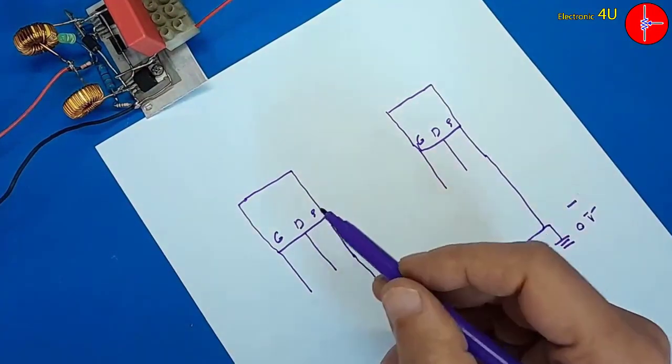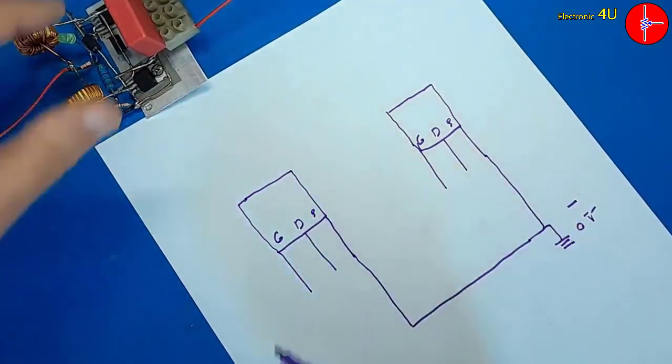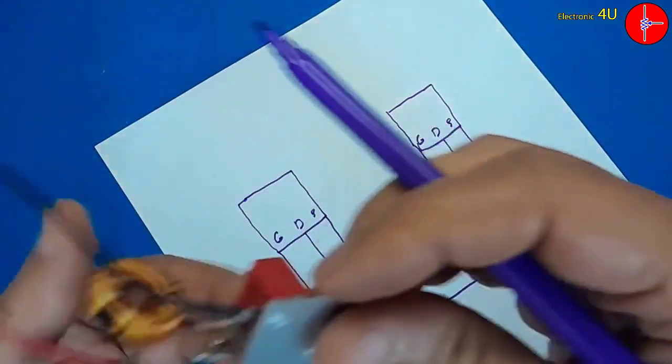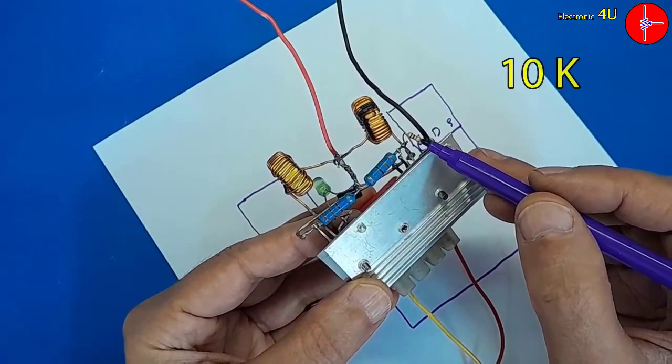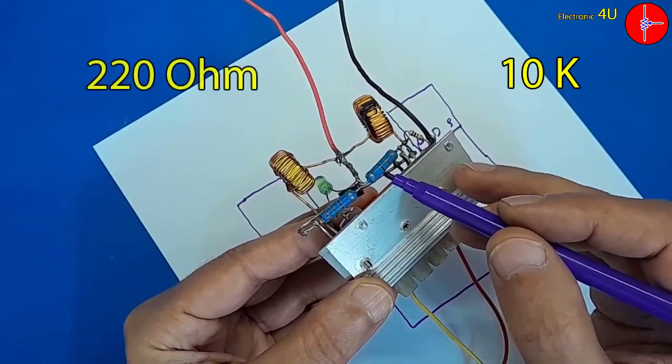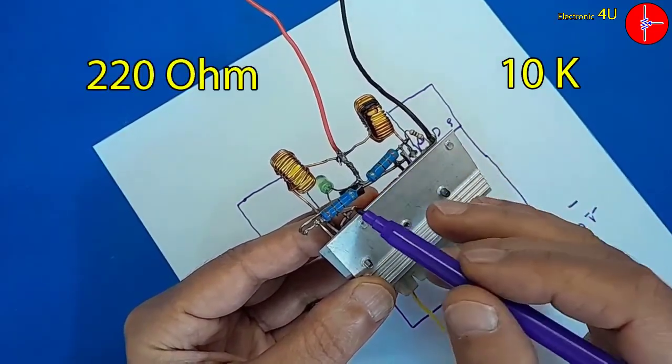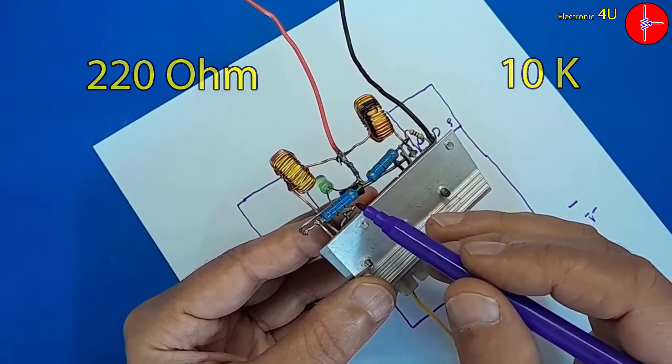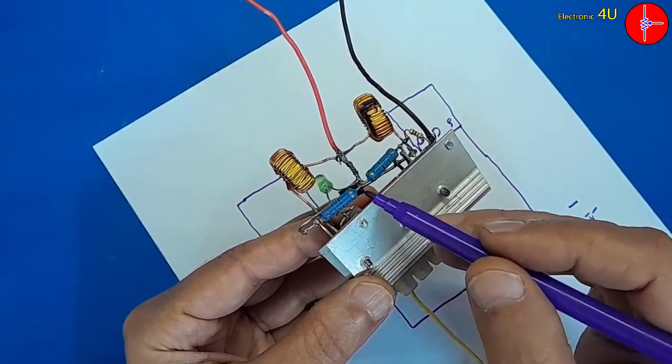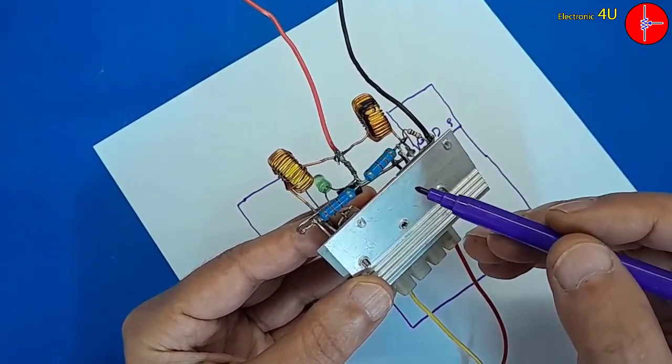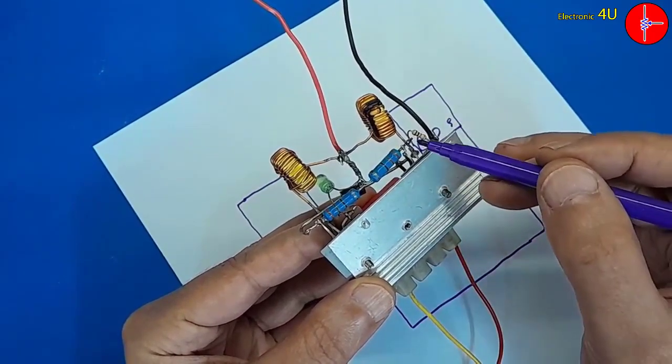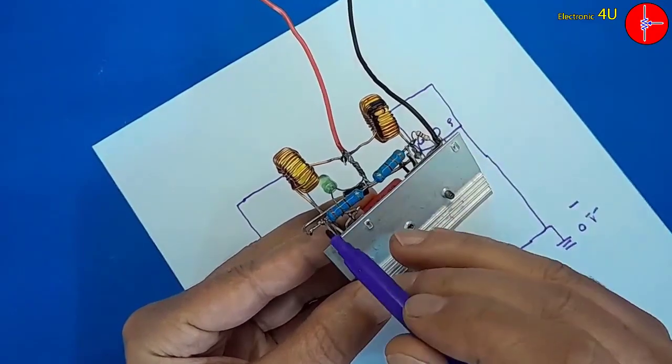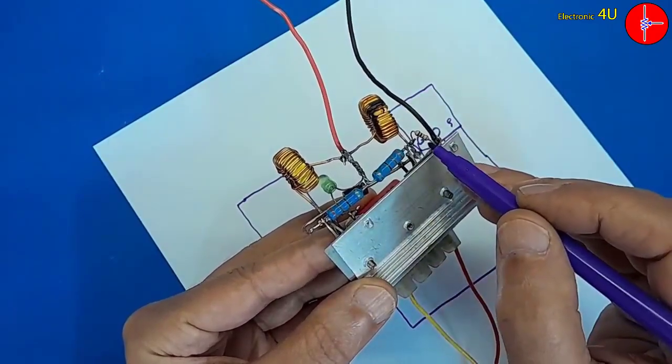To turn on the MOSFET, we need two resistors. 10 kilo ohms and 220 ohms resistance. This blue resistor is 220 ohms. The wattage of the resistor is not important. This resistance is 10 kilo ohms. A separate resistor is needed for each MOSFET, here and here.